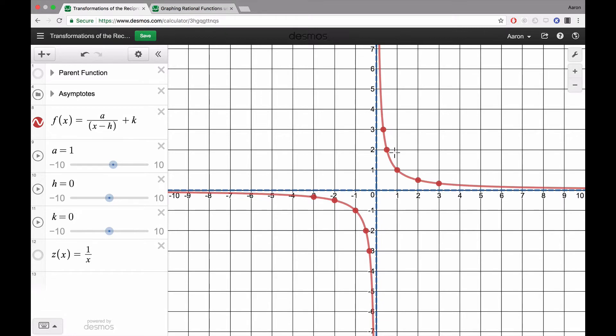We can apply all the same transformations that we learned before on this function. This is our parent function here, z(x) = 1/x. You can see that it's graphed over here. These are all the transformations that could be applied to it. Our function f(x) = a/(x - h) + k.